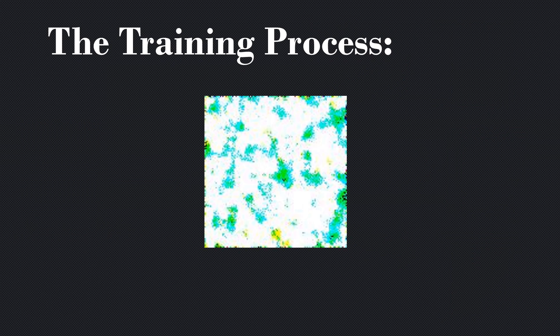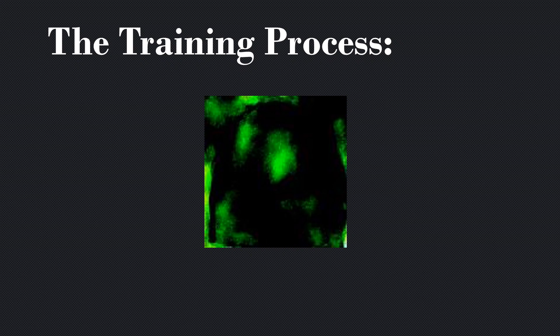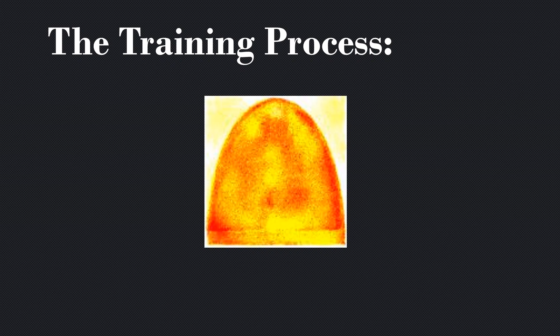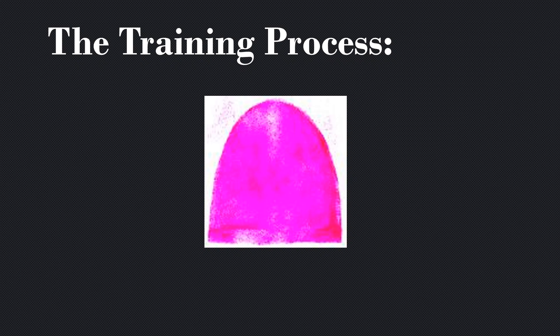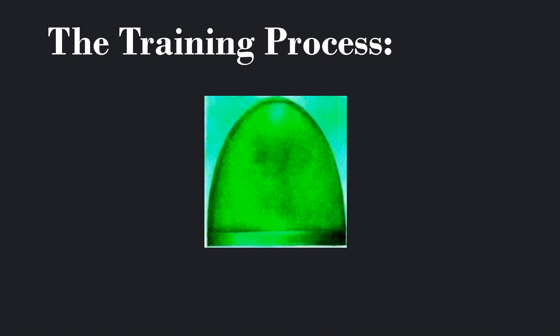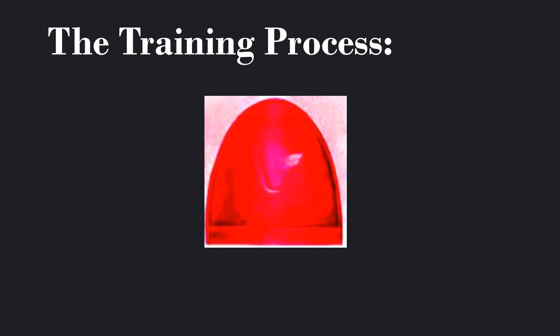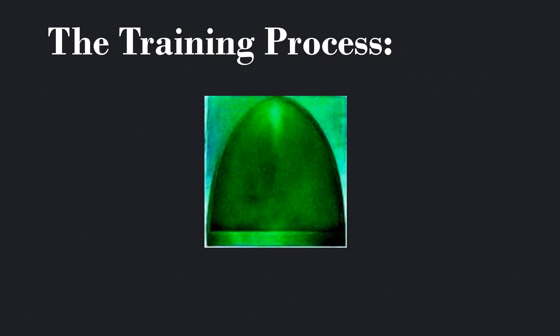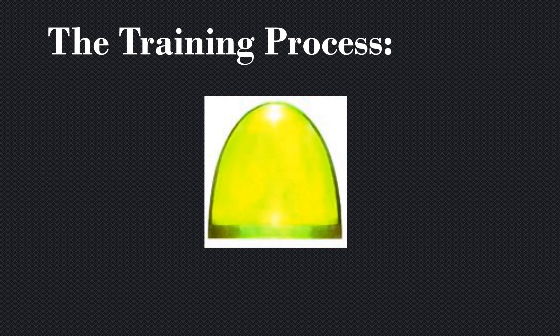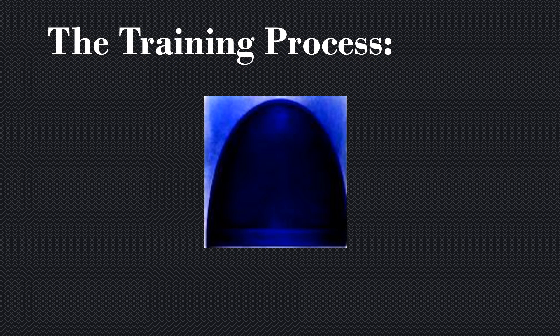I'm going to show you what this thing looks like when it trains. This is one of the first attempts of the network to generate a shoulder and it fails. It keeps updating itself and learning from the dataset. After a bunch of iterations, it actually almost looks like a shoulder, and it gets better — it jumps around a bit in quality. You eventually get to things that look like they could be shoulder pads, getting better and better, sometimes worse, but it keeps learning.